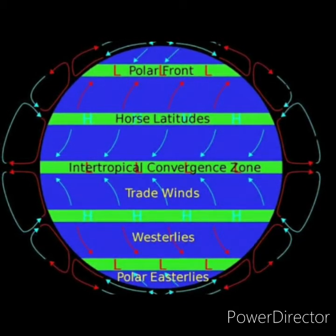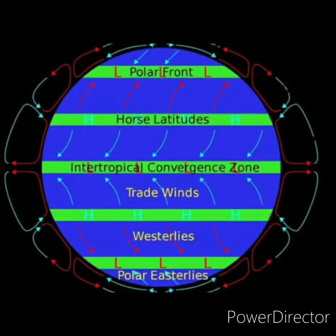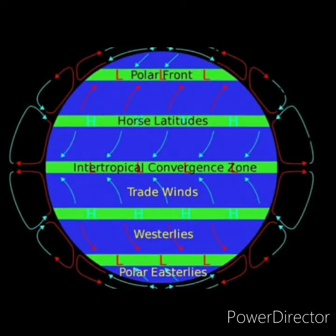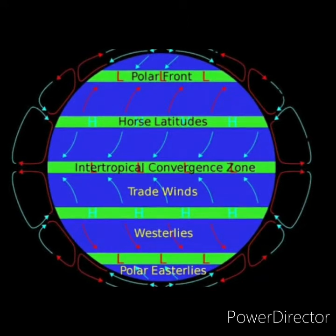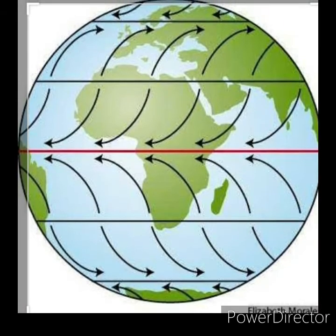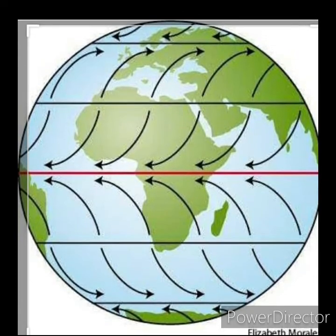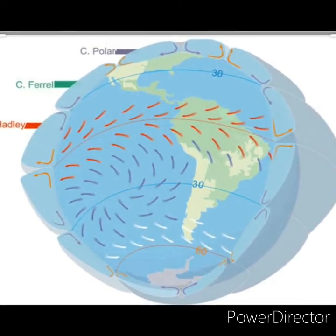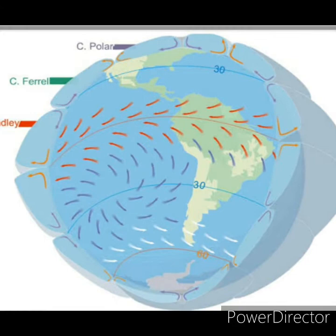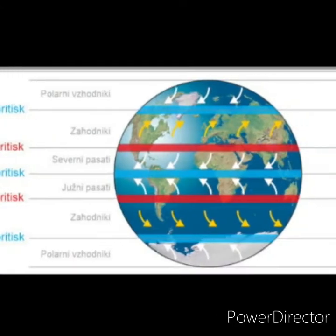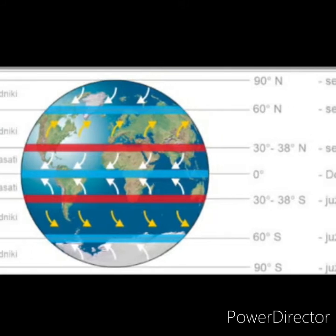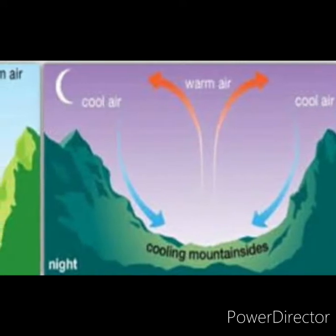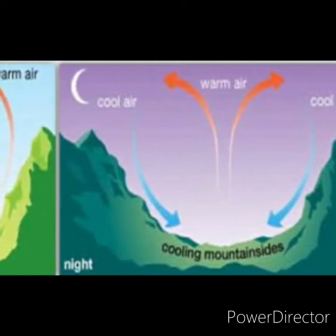Planetary winds, otherwise called permanent winds, have three types: trade winds, westerlies, and polar easterlies. Trade winds are useful for traders, hence the name. Westerlies come from the west side direction, and in polar regions the winds come from the east side, so they are called polar easterlies.